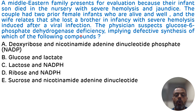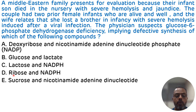So the correct answer here will be Option D: Ribose and NADPH. Because there is a deficiency of G6PD, it will imply the defective synthesis of these two compounds — ribose and NADPH.